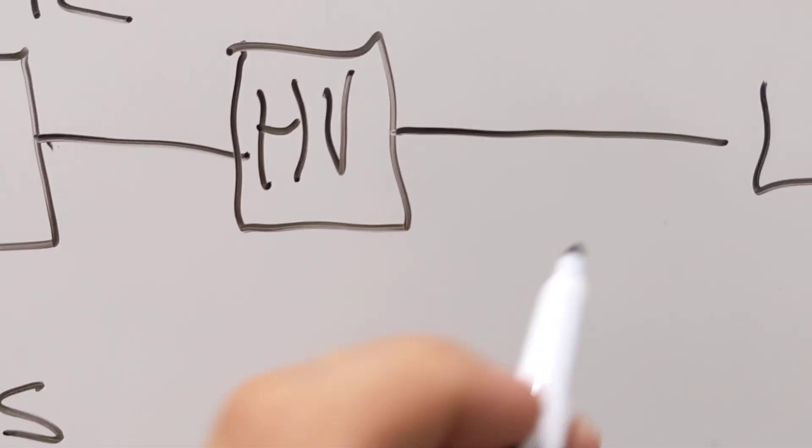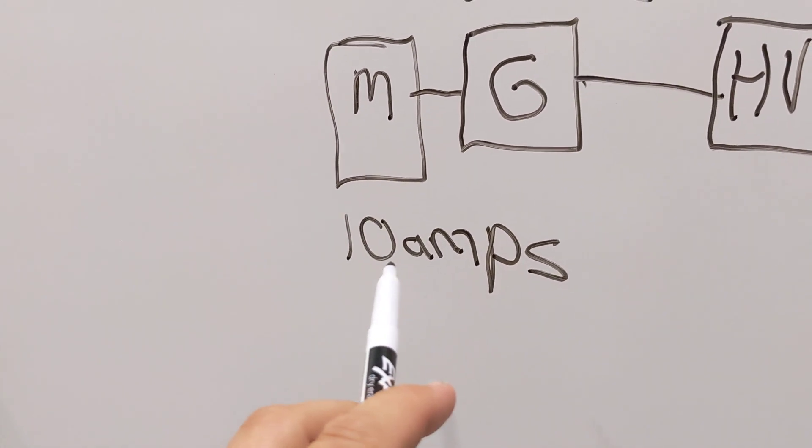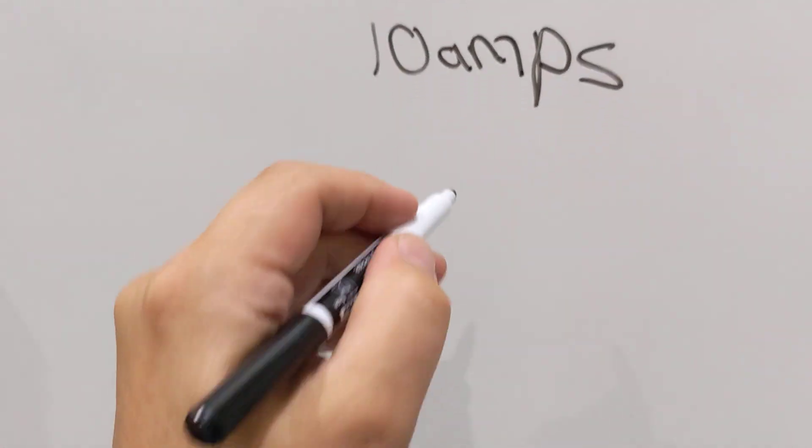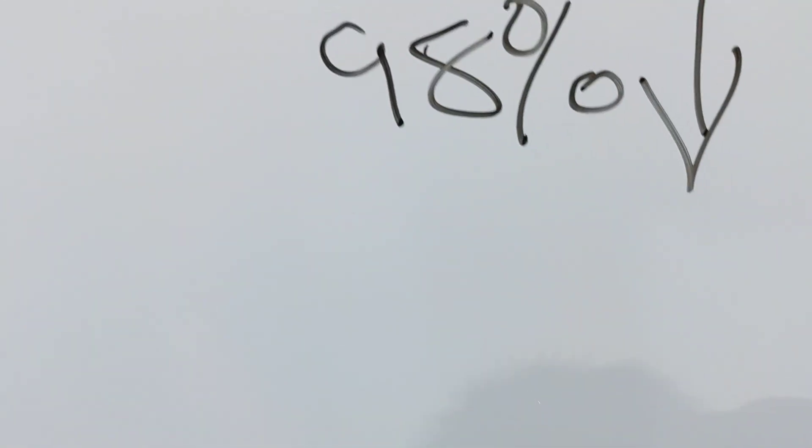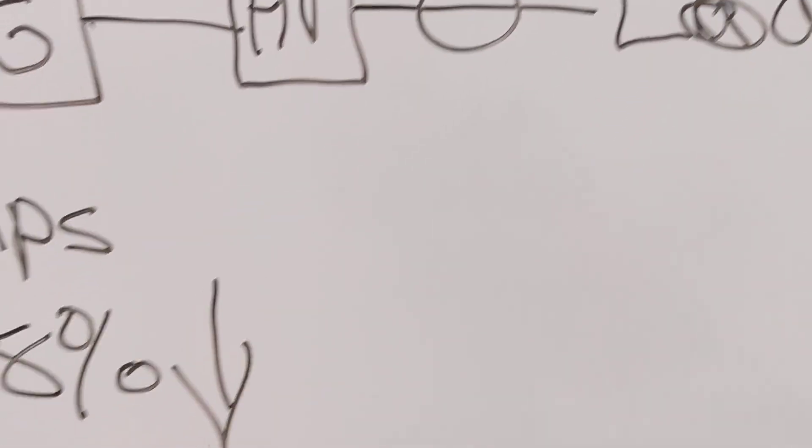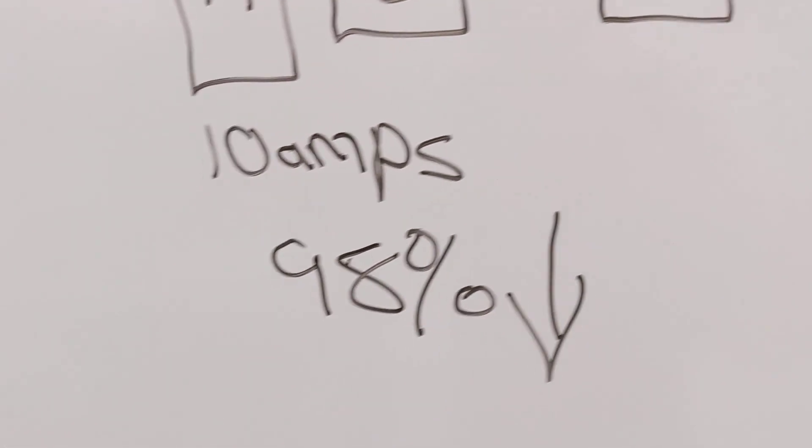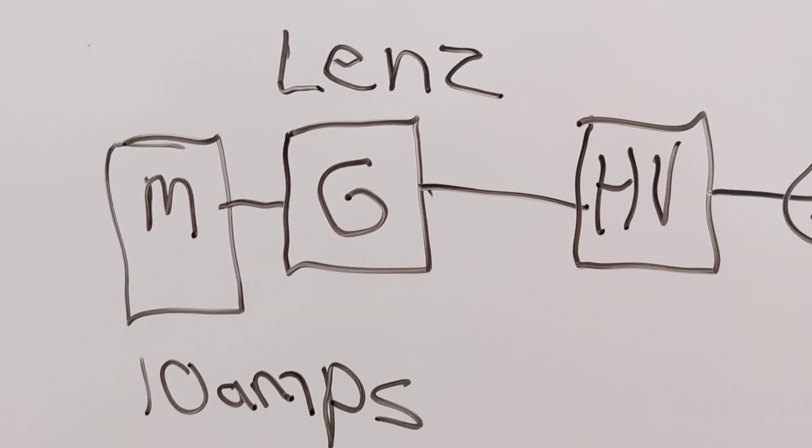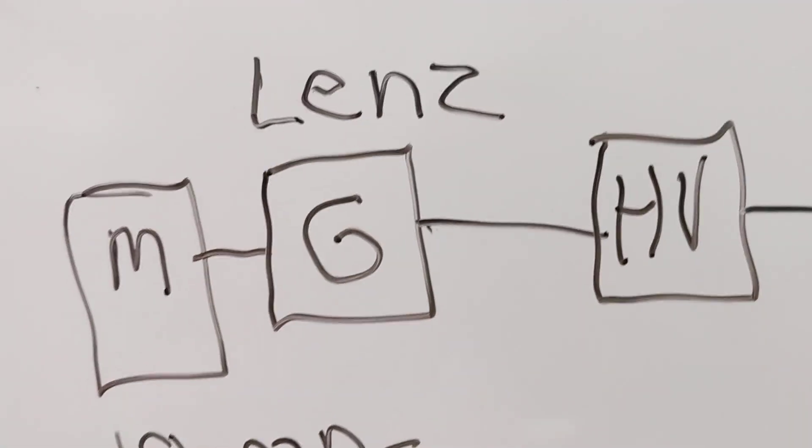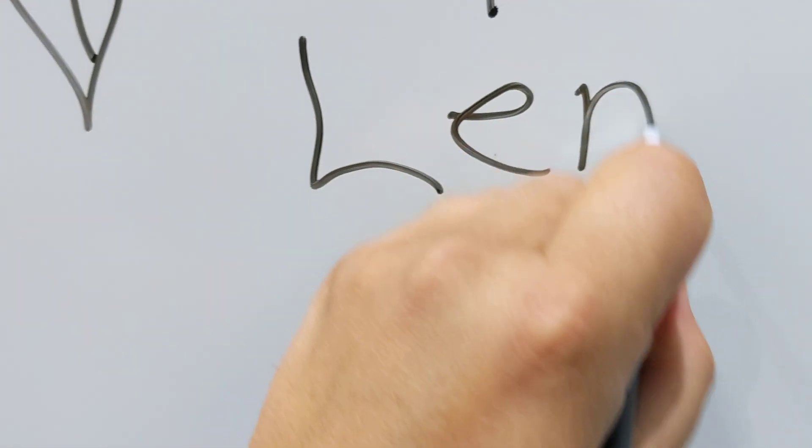So when he added a spark gap right there, just before the load, the amperage went to like less than a hundred milliamps. So you had about a 98% drop in amps. Soon as he added that spark gap after the high voltage transformer, the amps that were being drawn off the prime mover, the motor, went down. Not only that, the Lenz effect in the generator also went down to almost zero. Zero percent Lenz off the generator.